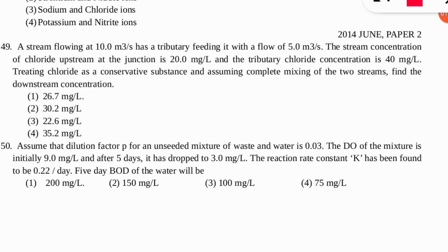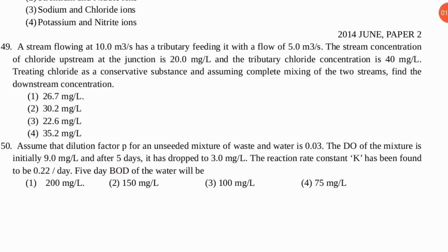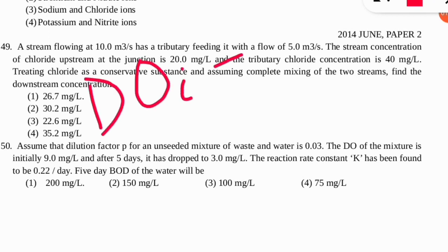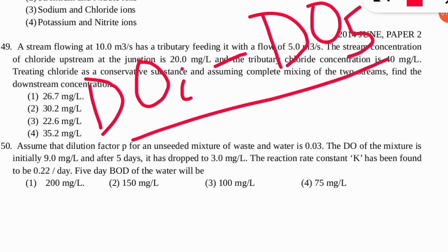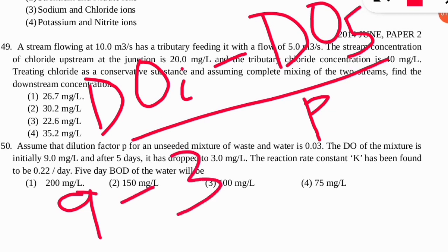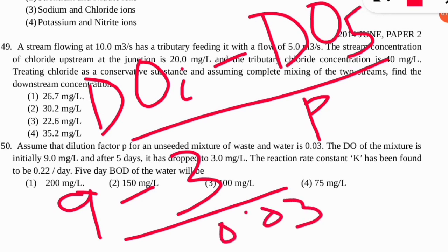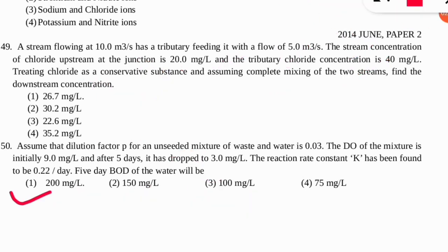Question 50: given a dilution factor P, initial dissolved oxygen of 9 mg/L, dissolved oxygen after 5 days of 3 mg/L, and reaction rate constant K = 0.22 per day, what is the BOD? The formula is: BOD = (DOᵢ − DOf) ÷ P. Substituting: (9 − 3) ÷ 0.03 = 200. So the BOD is 200 mg/L. Don't forget the unit.